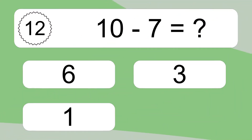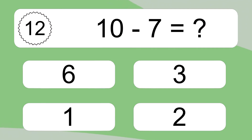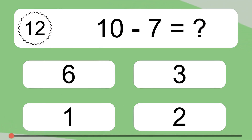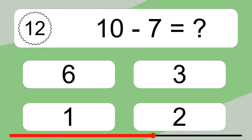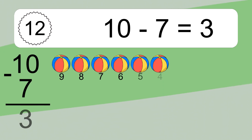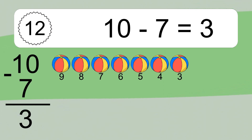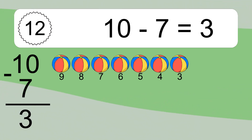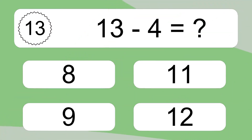10 minus 7 equals what? 10 minus 7 equals 3. Let's count it: 9, 8, 7, 6, 5, 4, 3.